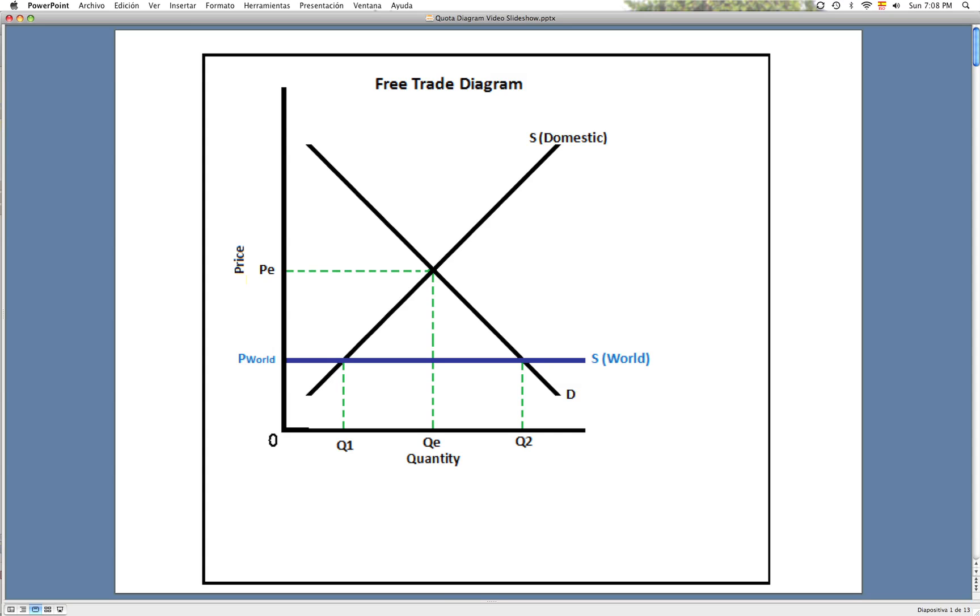Here is the domestic supply against the demand, which creates an equilibrium at PE on the price axis and QE on the quantity axis. The blue horizontal line is the world supply at price world.